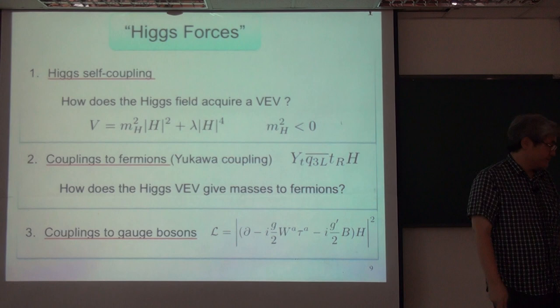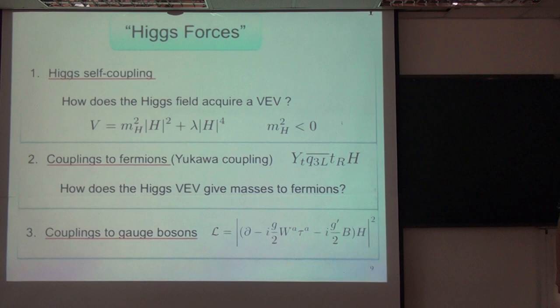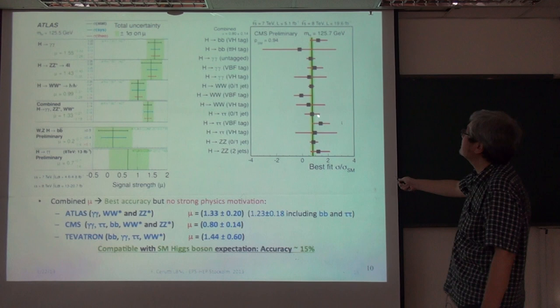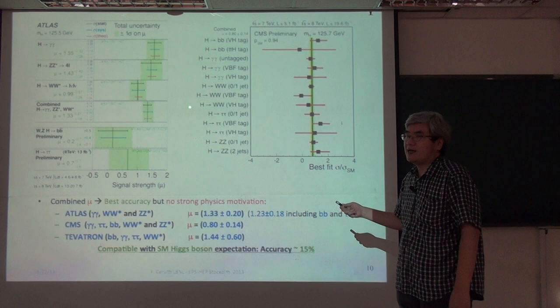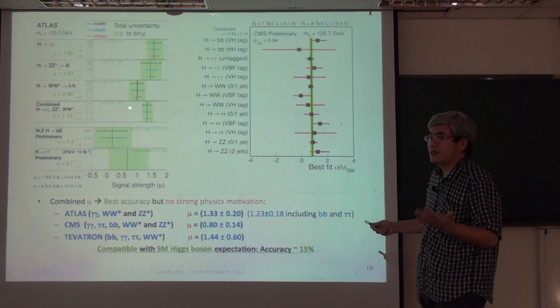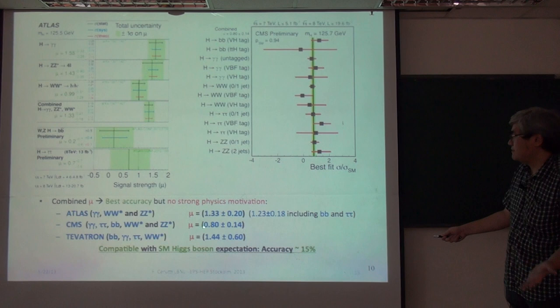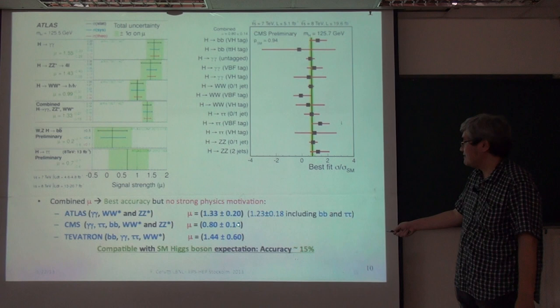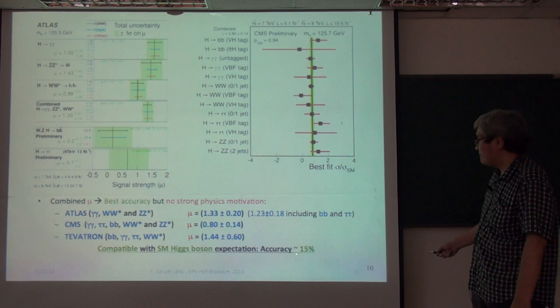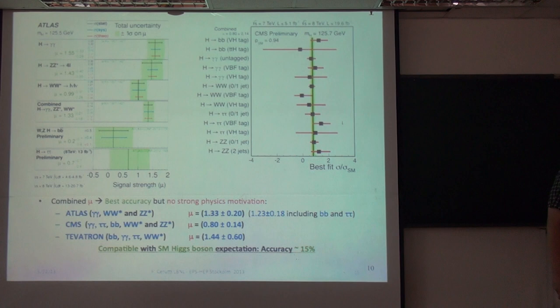From experiment — this is the ATLAS result and CMS result — it is consistent with the standard model prediction for Higgs production, single Higgs production and its decays. After combining the analyses, the signal strength is consistent with one. In the standard model, mu equals one for normalization, but using ATLAS and CMS combined it is within about 20%. The experimental uncertainty is about 15%, so it is very consistent with the standard model Higgs production and its decays.